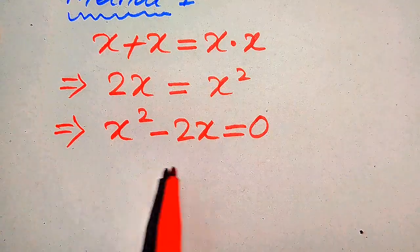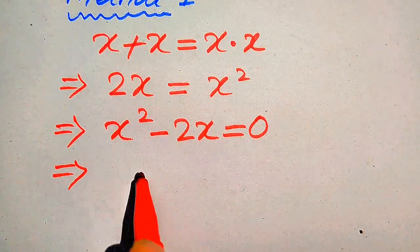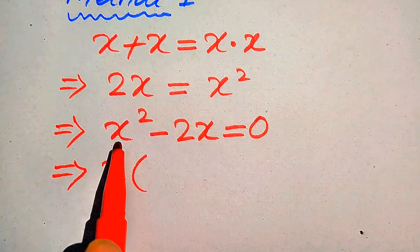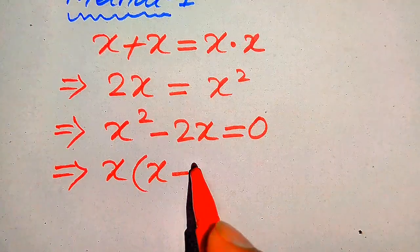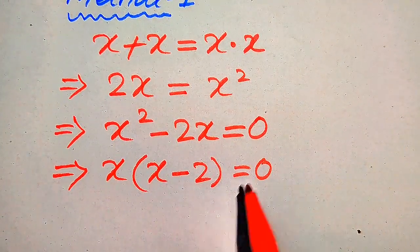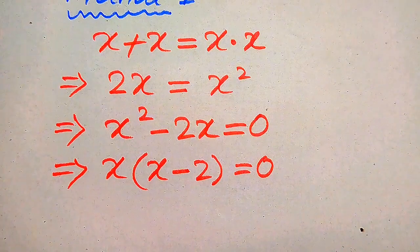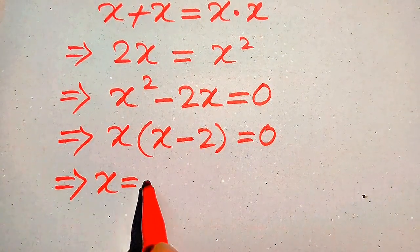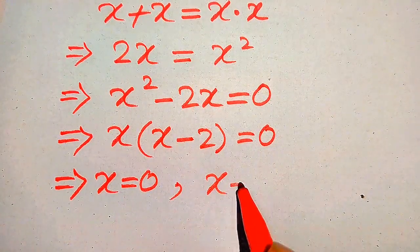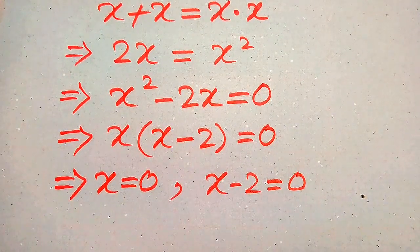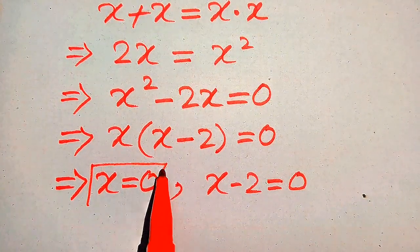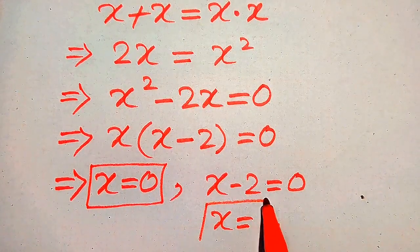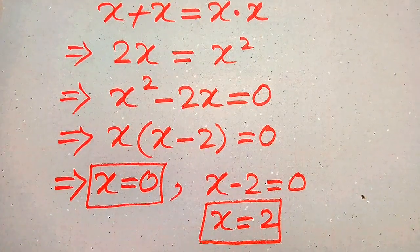Both terms involve x, so we take x as a common factor. When we factor out x, we get x times (x minus 2) equals 0. We then split this into two cases: the first case gives x equals 0, and the second case gives x minus 2 equals 0, so x equals 2. These are our two roots.